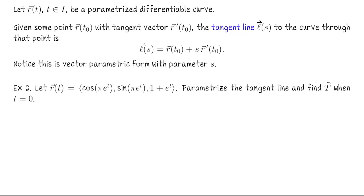Now suppose we have some parametrized differentiable curve. Let's look at the tangent line to that curve at a given point. Given some point R(t₀), whose tangent vector is R'(t₀) — that's just the regular velocity vector, differentiate R(t) component by component — the tangent line, which I'll write as L-vector since it's a vector-valued function in its own right, parametrized by s, is L(s) = R(t₀) + s · R'(t₀). Here s is the parameter and R' is our direction. I use s rather than t to distinguish parametrizing the curve from parametrizing the line.